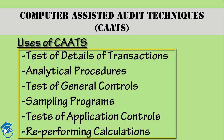Next comes sampling programs. If you want to adopt some samples — say a lot size of 50 out of 50 lakh — you can do that if you have Computer Assisted Audit Techniques in place. Sampling programs can be used to extract data for audit testing. In big firms, we usually have these sample programs. In my company we used to have one called RANDOM, which was the name of the software, and we used to get sample programs from CAATs through that.